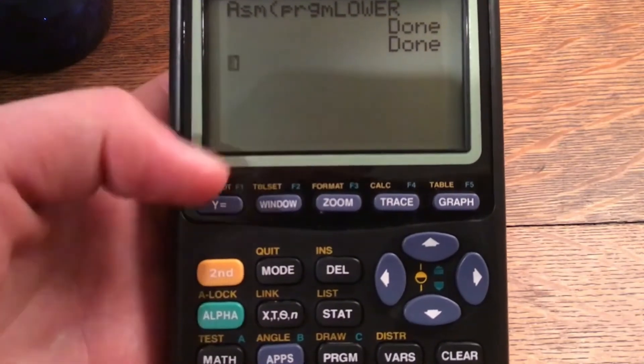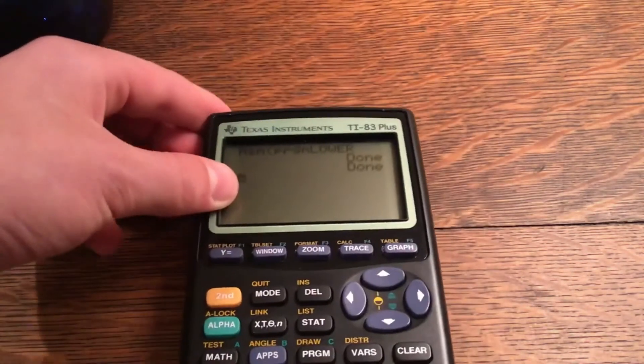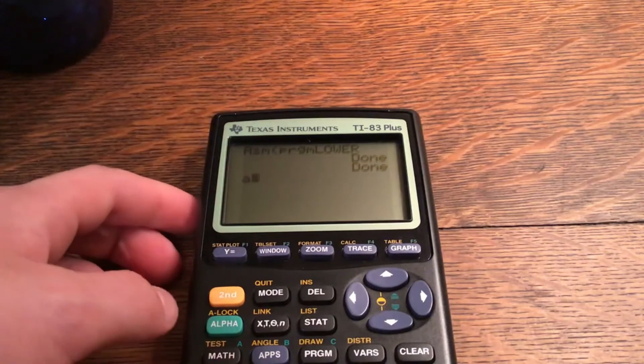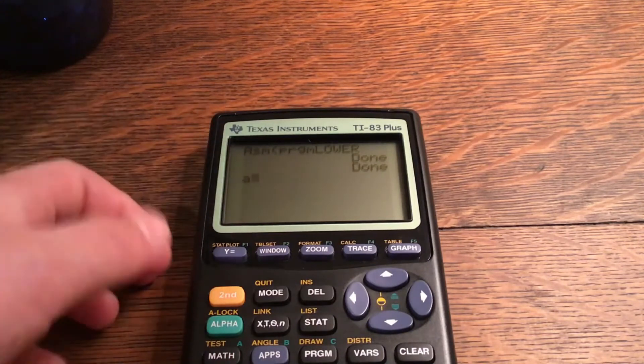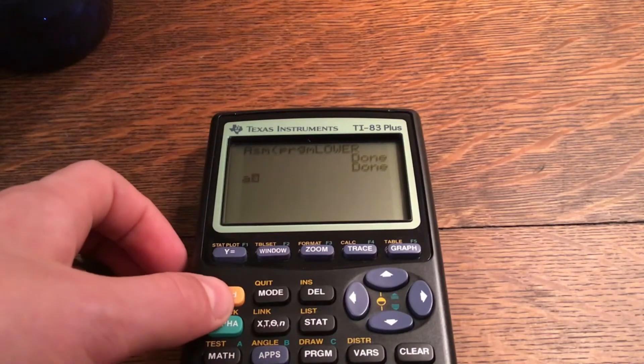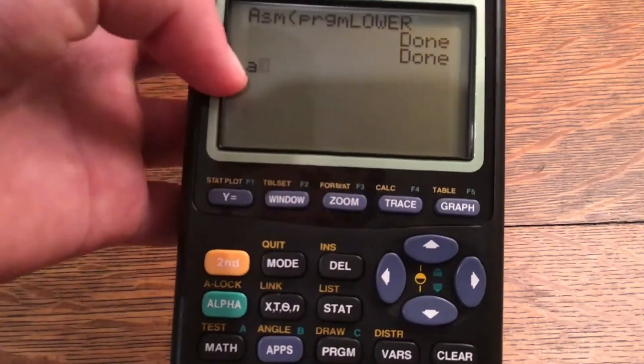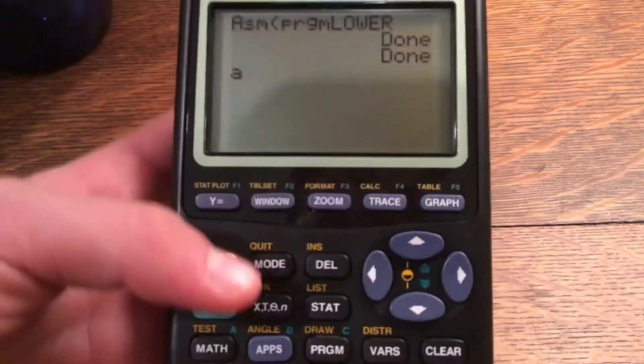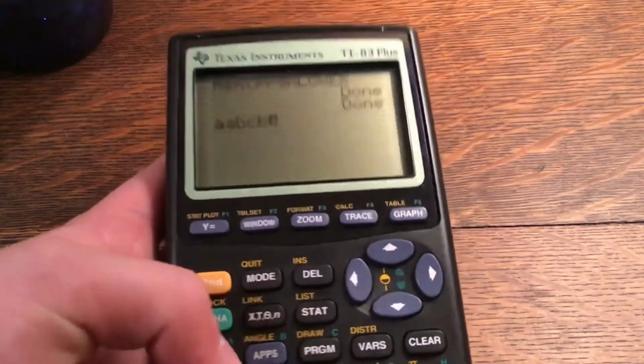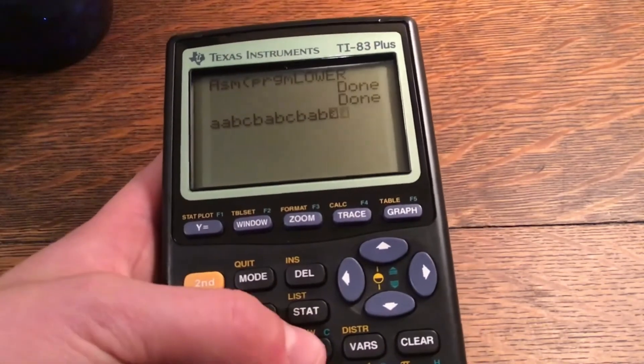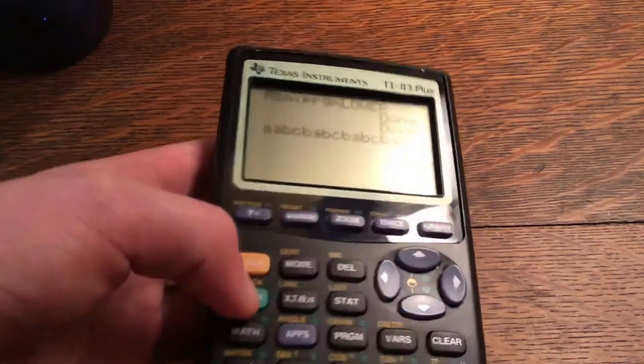I have found out that if you type a lowercase letter and then go second alpha, it's going to give you the lowercase a in the alpha lock. As you can see, it's not going to do the uppercase stuff. I'm just going to click alpha to exit that.